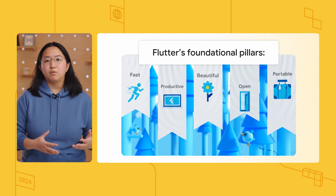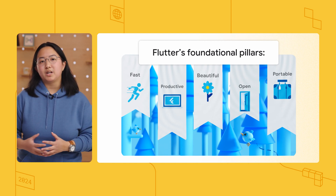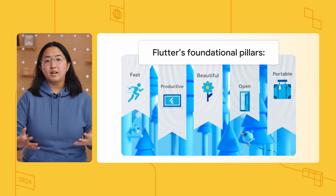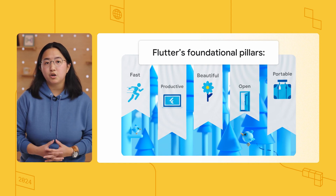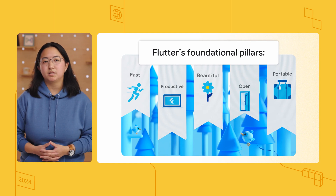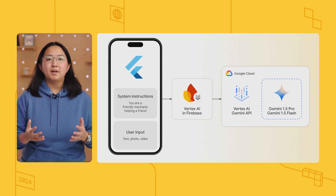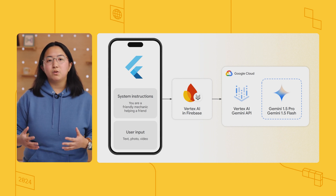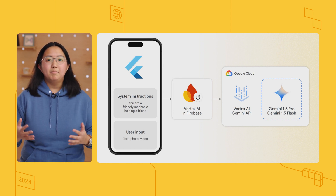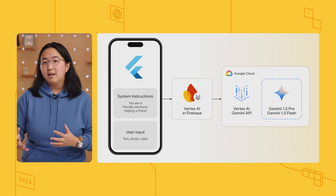Flutter also comes with libraries that get you building beautiful apps quickly. It comes with developer tools like Hot Reload, which lets you see your app changes immediately without waiting for it to recompile. Flutter is open source, so the code is there for you to dig into. And finally, you can get your app into the hands of more users on more platforms in a fraction of the time, since Flutter's singular code base can be compiled to multiple platforms. I used the Gemini API to make calls to the Gemini 1.5 Flash model, configured with a system prompt that guides responses towards helping users diagnose their car problems. The app is a chat UI that lets users send text messages and media, like images and videos, to the Gemini API.